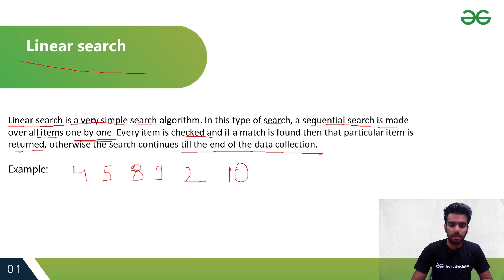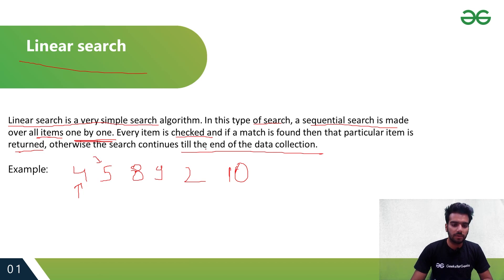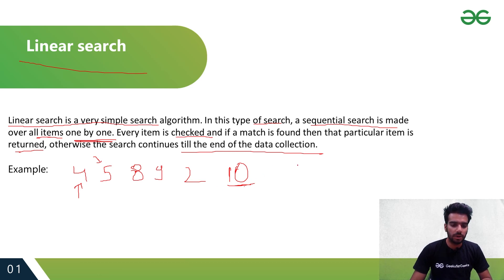Now let's say we have to search for 10. Then what happens in linear search — it will start with the first element in the array, and searching each element one by one, it will go to the last element of the array. If that target element is found in between, then it will return that element. And if not found till the last iteration of the loop, then it will terminate unsuccessfully saying that the element is not found.